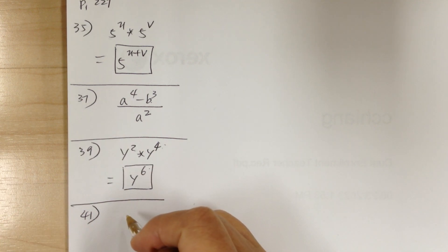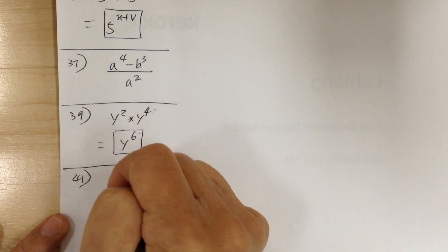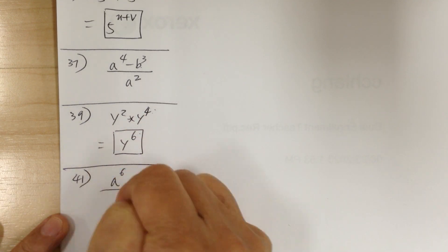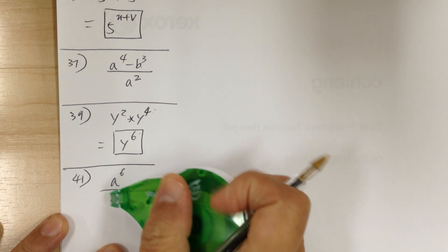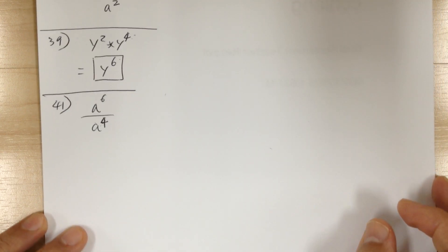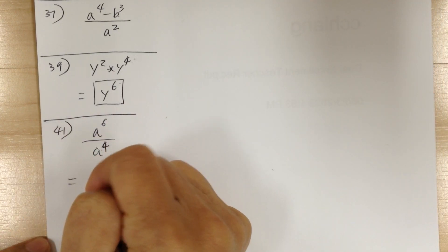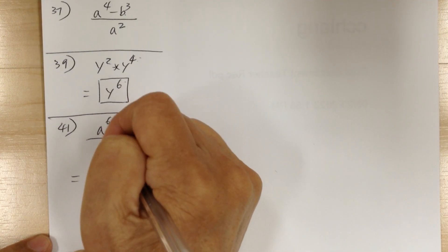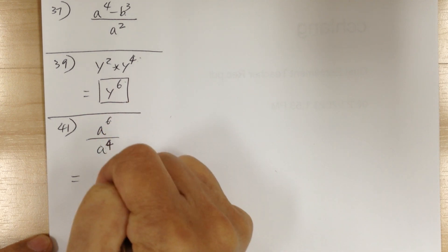Number 41, you have a to the 6 divided by a to the 4. This is a division, so you use the quotient rule. When you have division, you subtract the exponents. It would be a to the 2.